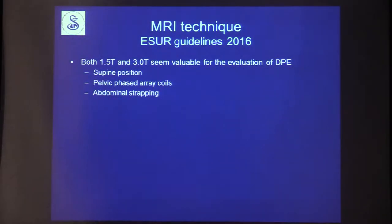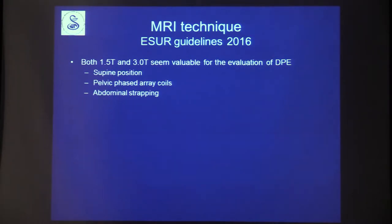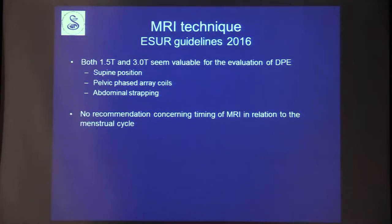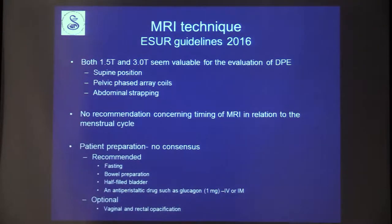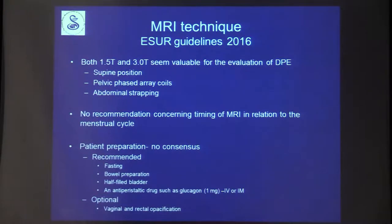The guidelines state that either 1.5 or 3 Tesla systems can be used. The patient should be supine using phased array coils and abdominal strapping to reduce motion. There is no recommendation concerning timing of MRI in relation to the menstrual cycle. For preparation, most recommend fasting, bowel preparation, imaging with a half-filled bladder, and use of anti-peristaltic drugs such as glucagon.